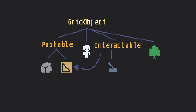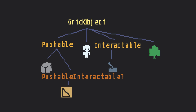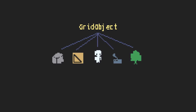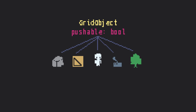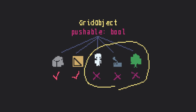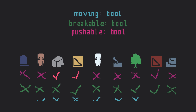But the crate is also technically interactable, so inherit pushable interactable grid object? No. How about making all grid objects pushable and enabling it only for those we need? But then these guys have a bunch of code they're not even using at all, and if we did this for every misalignment like this,